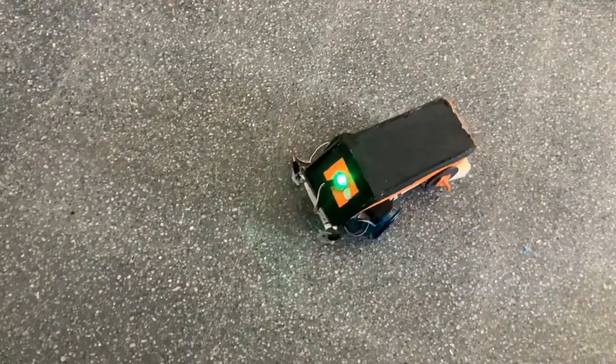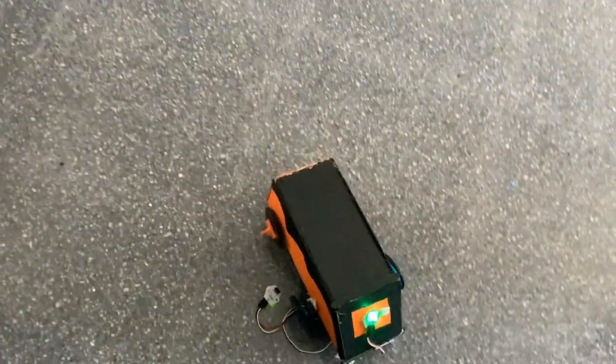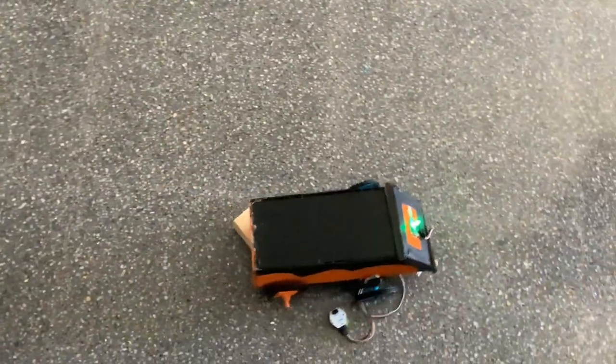However, one of the main problems we encountered was that the car would spin in a circle. This could have been due to many causes, either the coding or the sensors falling out, or possibly the structure that we built.